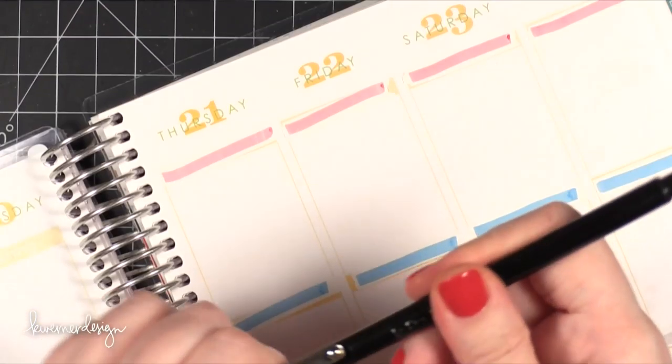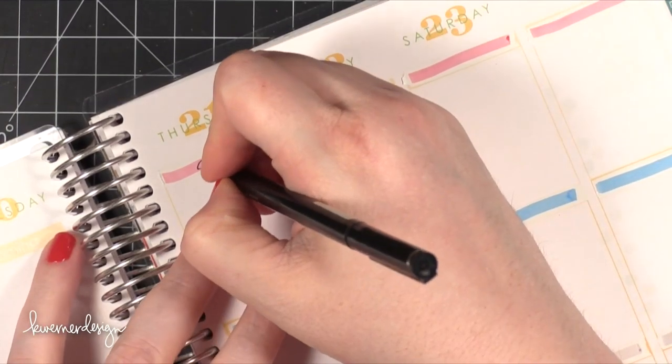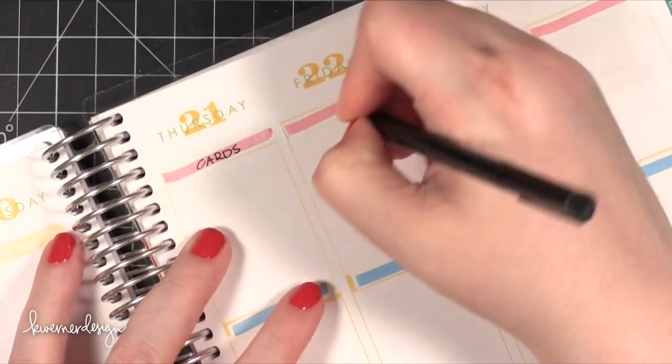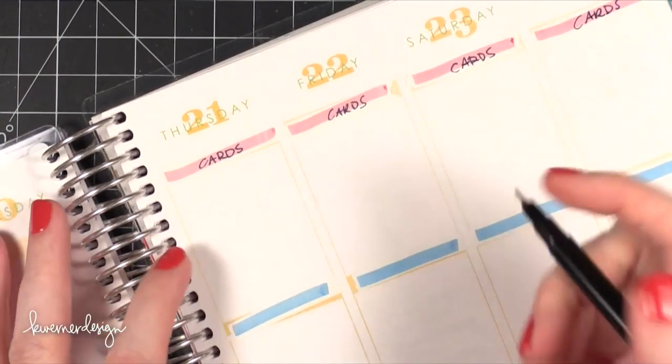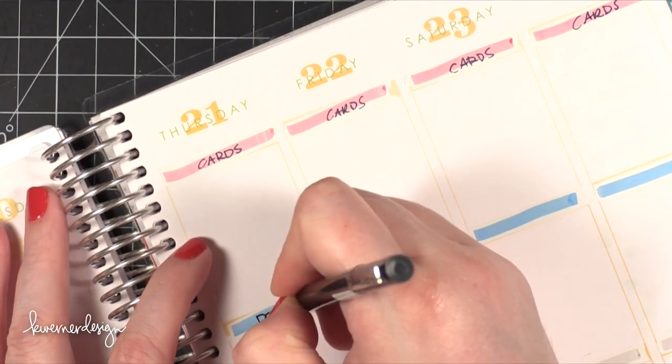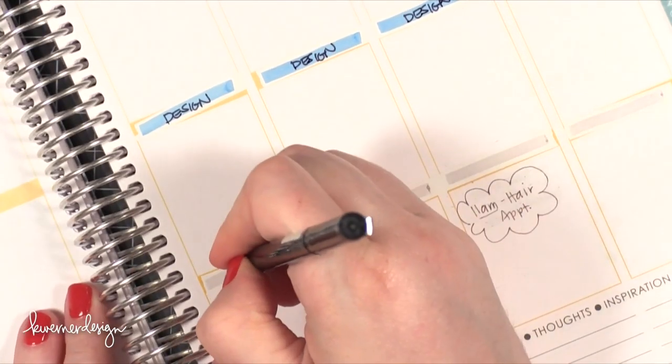And then I go in with my black Le Pen marker. And I label this top one cards. It's really cards slash videos, but it's just things I need to work on.